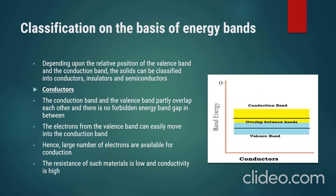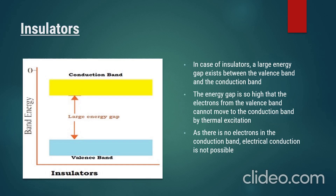We can classify conductors, insulators, and semiconductors on the basis of the conduction band. Depending upon the respective positions of the valence band and the conduction band: for conductors, the conduction band and the valence band partially overlap each other and there is no forbidden energy gap between them. Electrons from the valence band can easily move to the conduction band, so a large number of electrons are available in the conduction band. For such materials, resistance is low and conductivity is high. For insulators, a large energy gap exists between the valence band and the conduction band — the energy gap is so high that electrons from the valence band cannot move to the conduction band, so there is no electron in the conduction band and electrical conductivity is not possible.